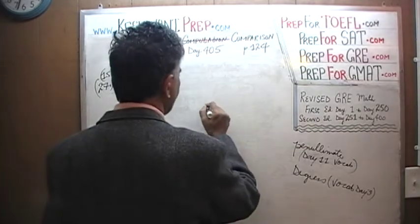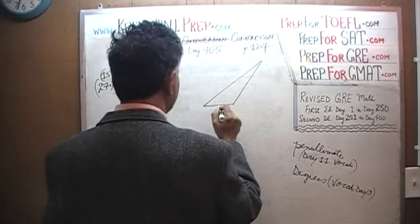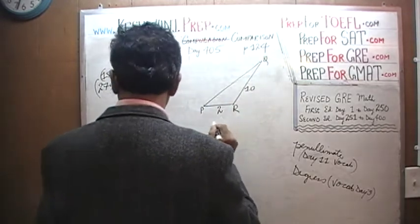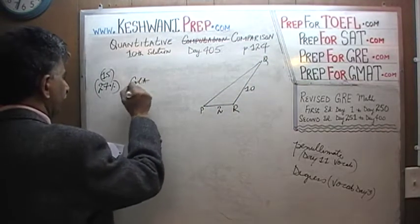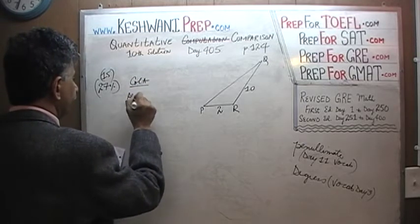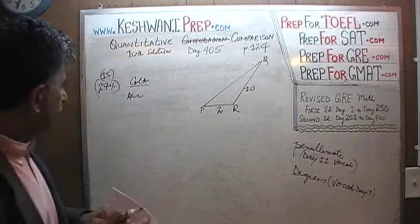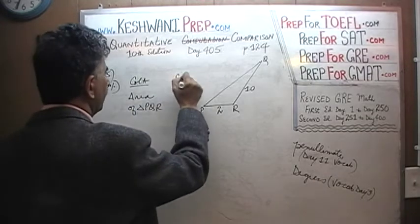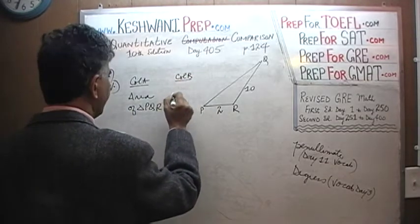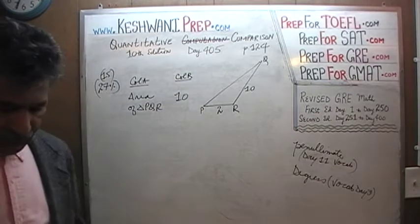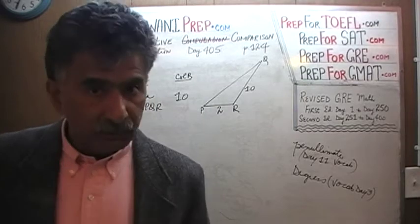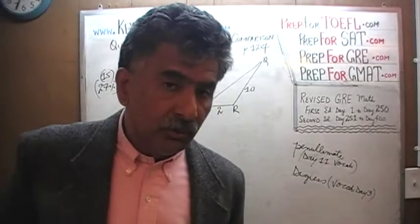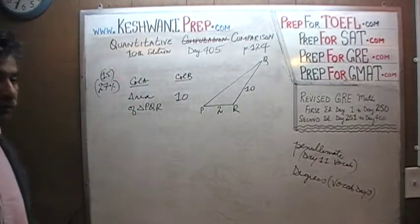Here is the problem. We have a triangle. We are told that one side is equal to 2 and another side is 10. We have vertices P, Q, and R. We are being asked to compare: in column A, the area of triangle PQR, and in column B, we have 10. As always, pause the video, solve the problem yourself, and then resume and compare your work with what we will do together.